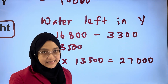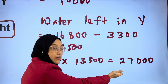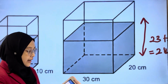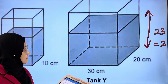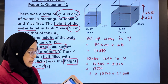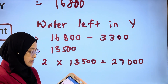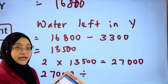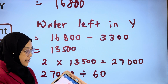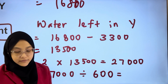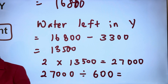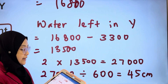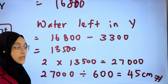Therefore, what is the height of tank Y? Take the volume divided by the base area of tank Y. That will be 27,000 divided by the base area of tank Y, which was 600. Therefore, the height of tank Y is 45 centimetres.